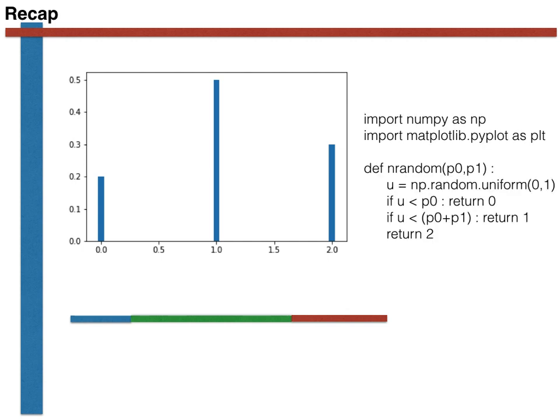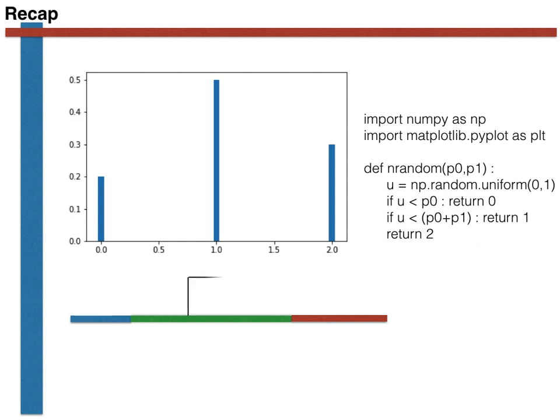As shown in the code on the right hand side of the slide, the value of the multinomial random variable is set equal to 0 if the uniform random variable falls within the blue segment of the line. If the uniform random variable falls within the green segment of the line, the multinomial random variable is set equal to 1. Lastly, if the uniform random variable falls into the red segment of the line, the value of the multinomial random variable is set equal to 2.